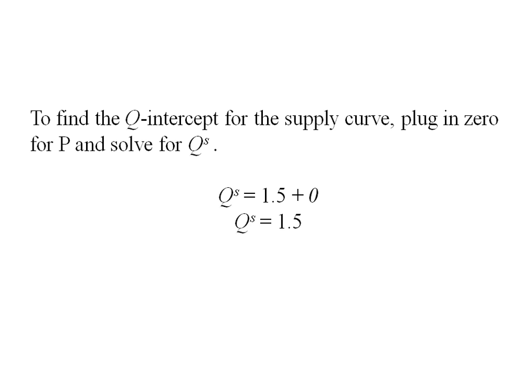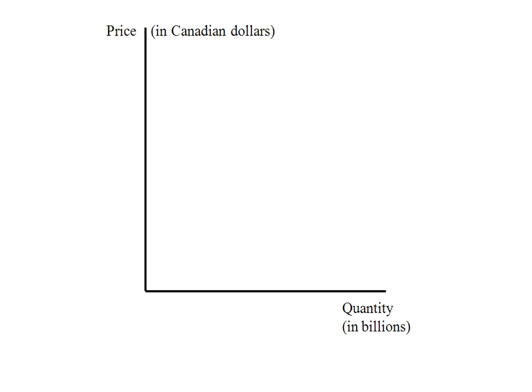So now we've got our P and Q-intercepts and we've got three points we can plot on our supply curve. Here I've got the price in Canadian dollars of a bushel of wheat and the quantity in billions. Here's my Q-intercept of 1.5. My P-intercept was a negative 1.5.